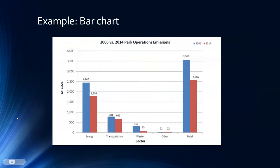In this example, we can see how a bar chart looks. Each of the independent variables such as energy, transportation, waste, other, and total are listed on the X-axis, while the measurement of CO2 is labeled at intervals of 500 on the Y-axis. Each of the bars represents the amount of CO2 emissions each sector generated in 2006 and 2014. Looking at this chart, the user can quickly learn which sector has achieved the largest reduction in CO2 emissions and also see that the total emissions from all sectors has decreased over the eight-year period.